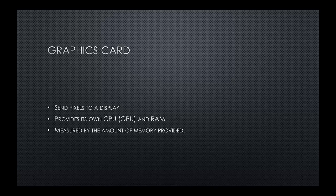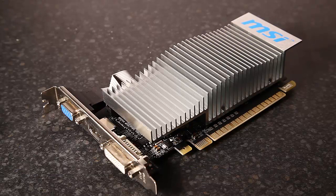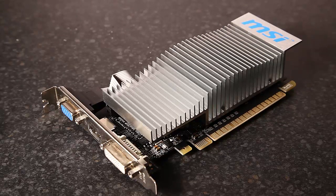A graphics card is a printed circuit board that performs two roles: it sends pixels to the display, and provides its own specific type of processing using its own processor known as a GPU – a graphical processing unit. It also has its own RAM on board, measured by the amount of memory provided. This particular graphics card has its own one gigabyte DDR3 memory and a GeForce 210 GPU.